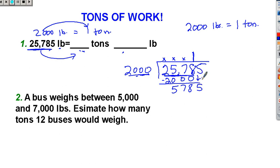Then you subtract and get 578, and you bring down the 5. Now, how many times does 2,000 go into 5,785? Let's count by 2,000. 2,000, 4,000, 6,000. Oops, 6,000 is too big. So it goes in two times. What's 2 times 2,000? That's equal to 4,000. Subtract and get 1,785.